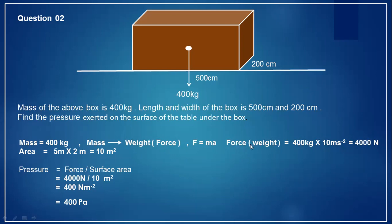Force equals mass multiplied by gravitational acceleration: 400 kg × 10 = 4000 Newton. The dimensions given in centimeters must be converted to meters. The area under the box is 5 meters × 2 meters = 10 square meters. Pressure equals 4000 Newton divided by 10 square meters = 400 Newton per square meter, or 400 Pascal.